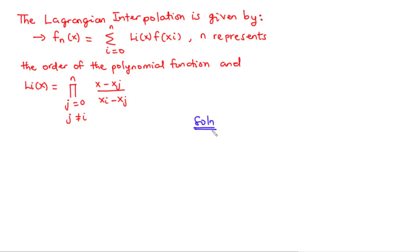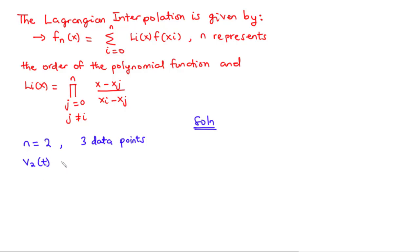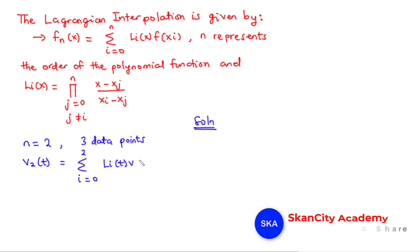Since we want to solve this problem using a second order Lagrange polynomial, n equals 2, and we are going to have n plus 1 data points, so that is 3 data points. We can write the velocity function as V2 of t, because velocity is a function of time, equal to the summation from i equals 0 to 2 of li of t times v of ti.